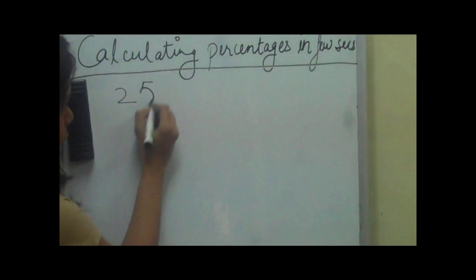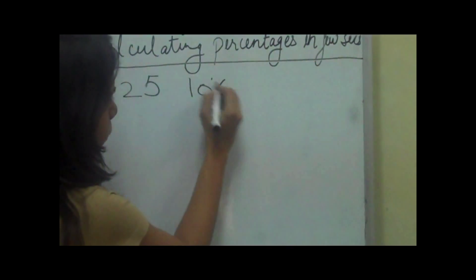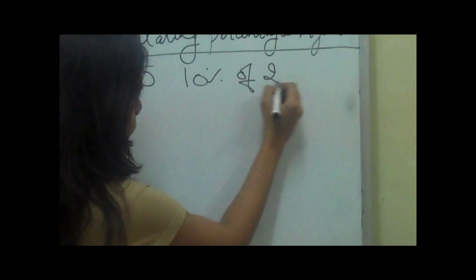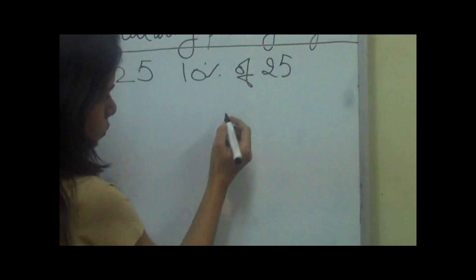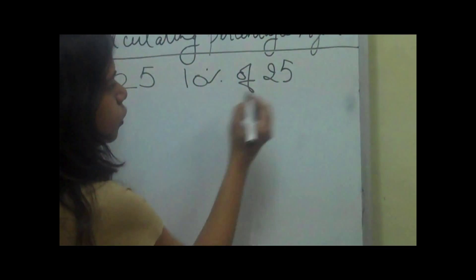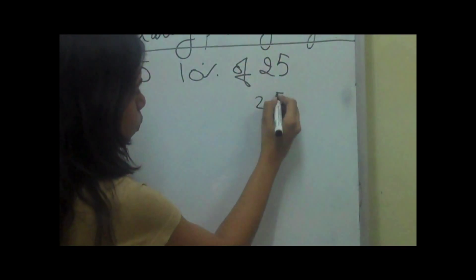For example, if we have 25 and we need to calculate 10 percent of 25, we simply shift the decimal digit ahead. So 10 percent of 25 is 2.5.